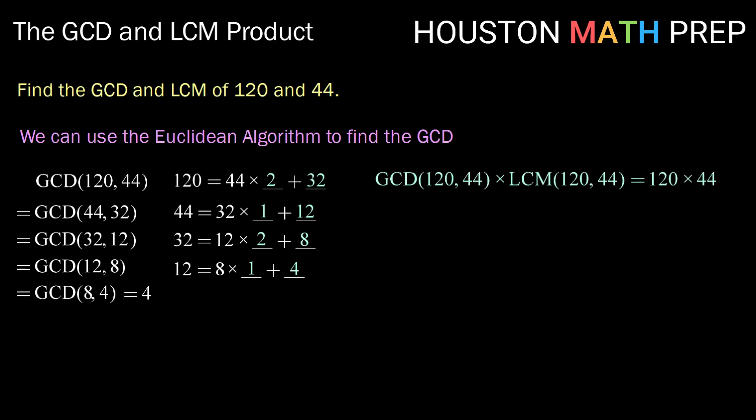Now using the GCD and LCM product, we know that the GCD of 120 and 44 times the least common multiple or LCM of 120 and 44 should be equal to the product of 120 and 44. We found the GCD to be 4 and we can multiply 120 times 44 to get that 4 times our least common multiple is equal to 5280.